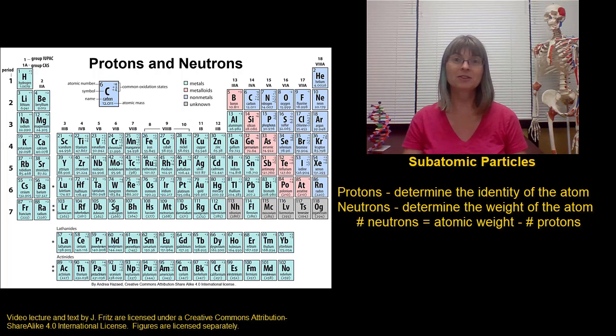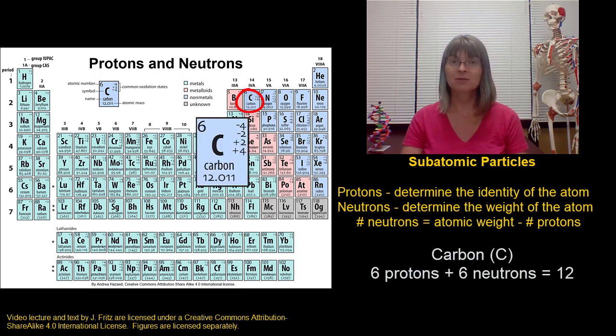It is possible to have different numbers of neutrons without changing the identity of the atom. For example, you can have carbon. We look at carbon, it has an atomic number of six, so it always has six protons. The atomic mass listed is 12, so it usually has six neutrons as well. But we sometimes have carbon that has eight neutrons, and that gives that carbon an atomic mass of 14.